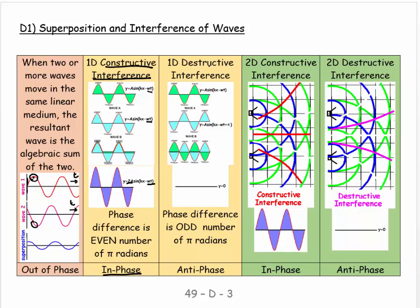The second panel shows destructive interference. Because of the position on the string, we get a crest arriving at the same time as a trough — the crest cancels out the trough and we get no oscillation. This is a node. This is destructive interference because the two waves cancelled each other out at this point. The phase difference we call anti-phase — not just out of phase. Out of phase means you're not quite lined up, but anti-phase means the crest comes at the same time as the trough. The phase difference is an odd number of pi radians.